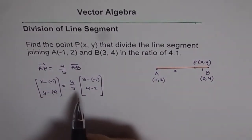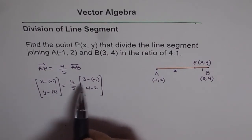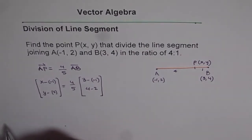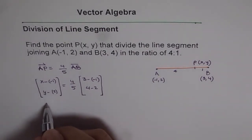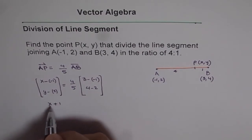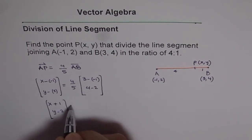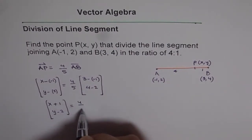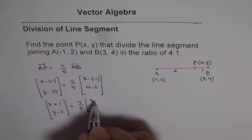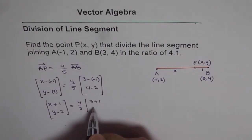Now, in this, we can compare and find the value. So we get here, X plus 1 and Y minus 2 is equal to 4 over 5 of 3 plus 1 and 4 minus 2 is 2.